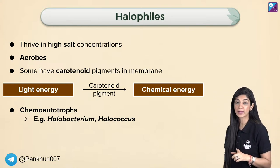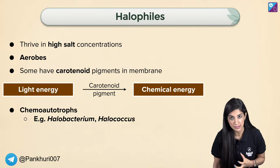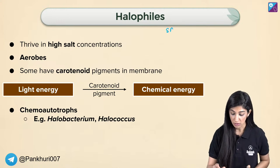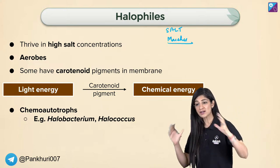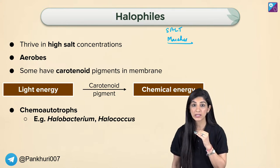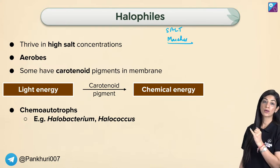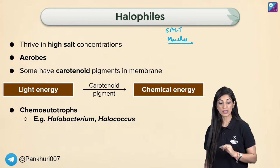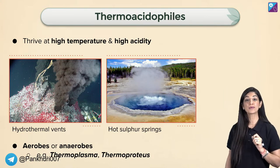Next come halophiles. 'Halo' means very high salinity — very high salt concentration. On Earth there are naturally occurring salt marshes — areas where soil has such high salt concentration that no life form can exist there, neither animals nor plants. But Archae bacteria are found there. They are aerobic. Examples include Halococcus and Halobacterium.